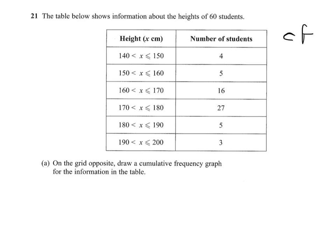So we're looking at how many students were up to 150, which is 4. How many up to 160, which means we've got to include the previous number, so that gives us 9. And how many up to 170, so that would be 4, 5 and 16, or if you like 9 and 16, that is 25.